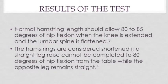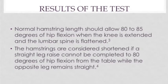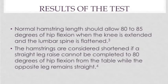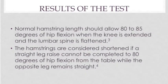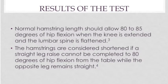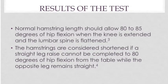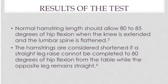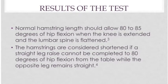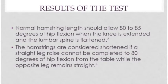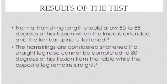Results of the test: normal hamstring length should allow 80 to 85 degrees of hip flexion when the knee is extended and the lumbar spine is flattened. The hamstrings are considered shortened if a straight leg raise cannot be completed to 80 degrees of hip flexion from the table while the opposite leg remains straight.